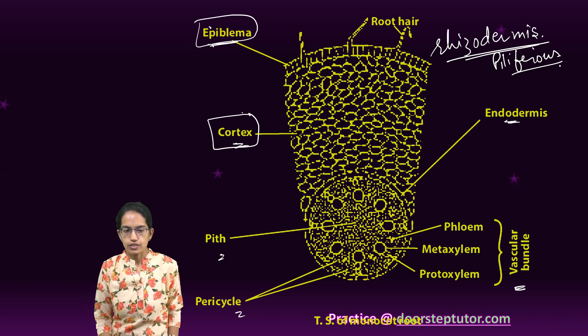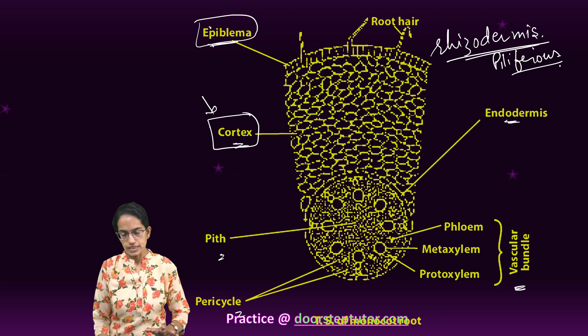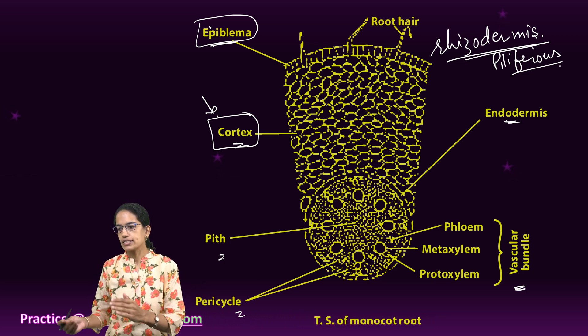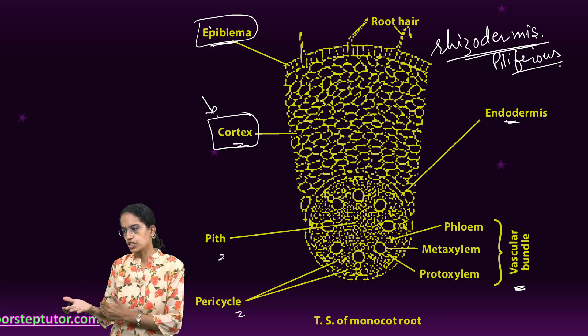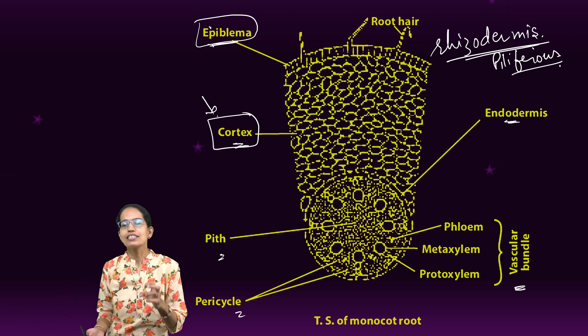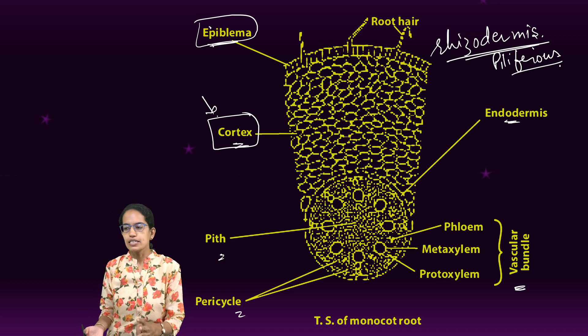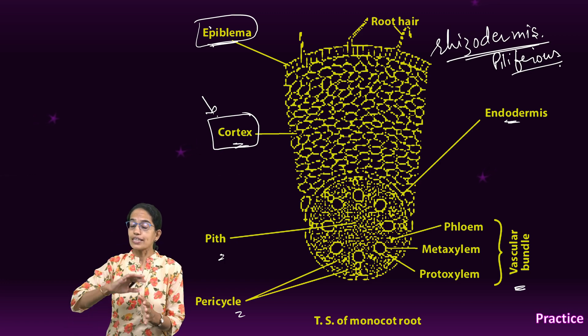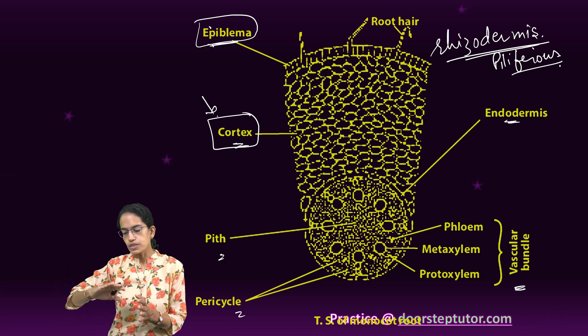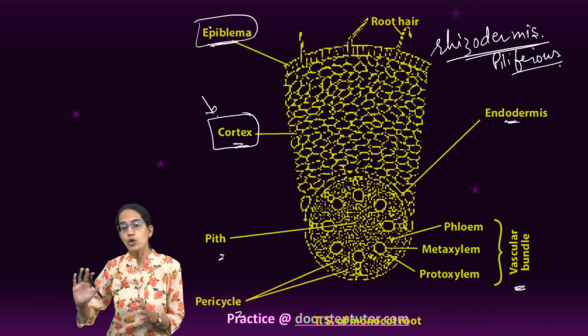Next to it is cortex. Cortex has parenchymatic cells. This cortex has three important functions: conduction of water from the root hairs to the inner tissues, storage of food, and it forms the exodermis in the case of older roots.